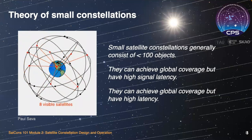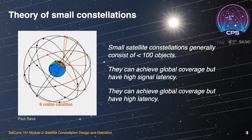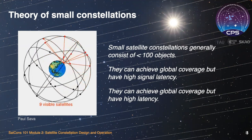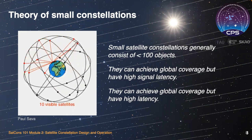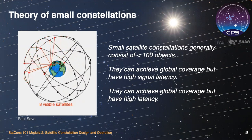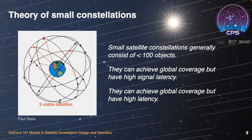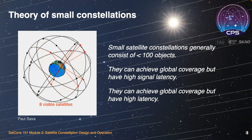Few satellites in higher orbits can achieve global coverage if signal latency isn't a concern, and yet their missions can be quite complex. An example of such a small constellation is the Global Positioning System, or GPS. Consisting of only 24 satellites, the GPS constellation provides very precise timing signals to receivers on the ground. To achieve global coverage, the satellites fly at an altitude of around 20,000 kilometers above Earth. The time delay in the arrival of their signals determines the distance between the satellites and an observer, which in turn helps precisely locate the observer on the surface of the Earth.